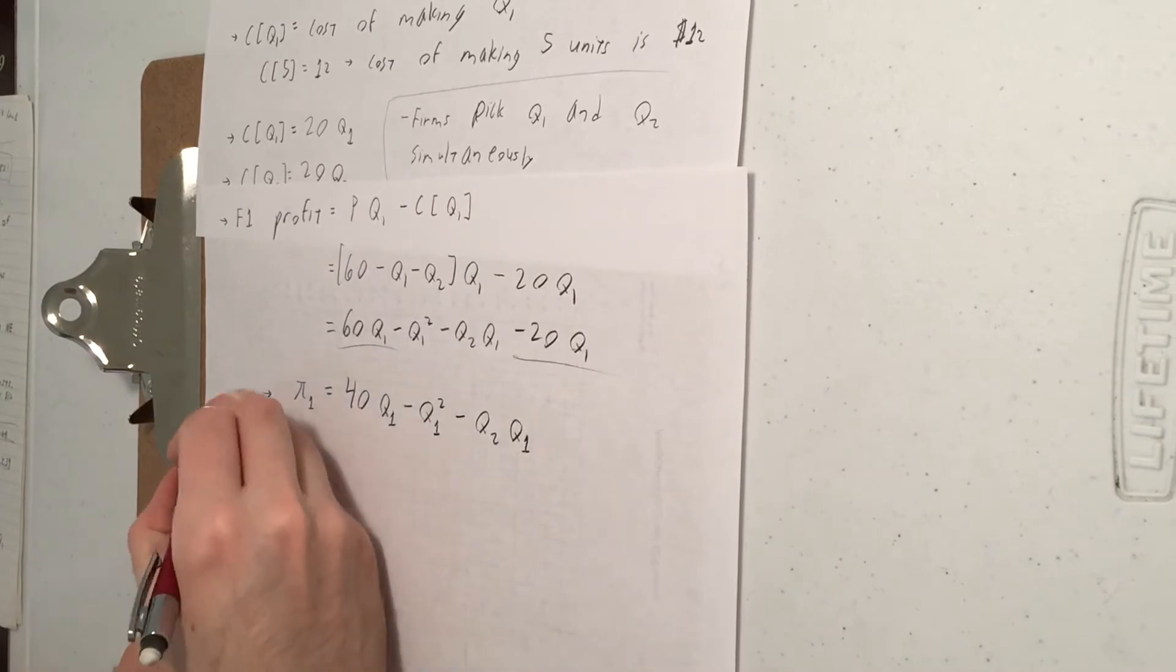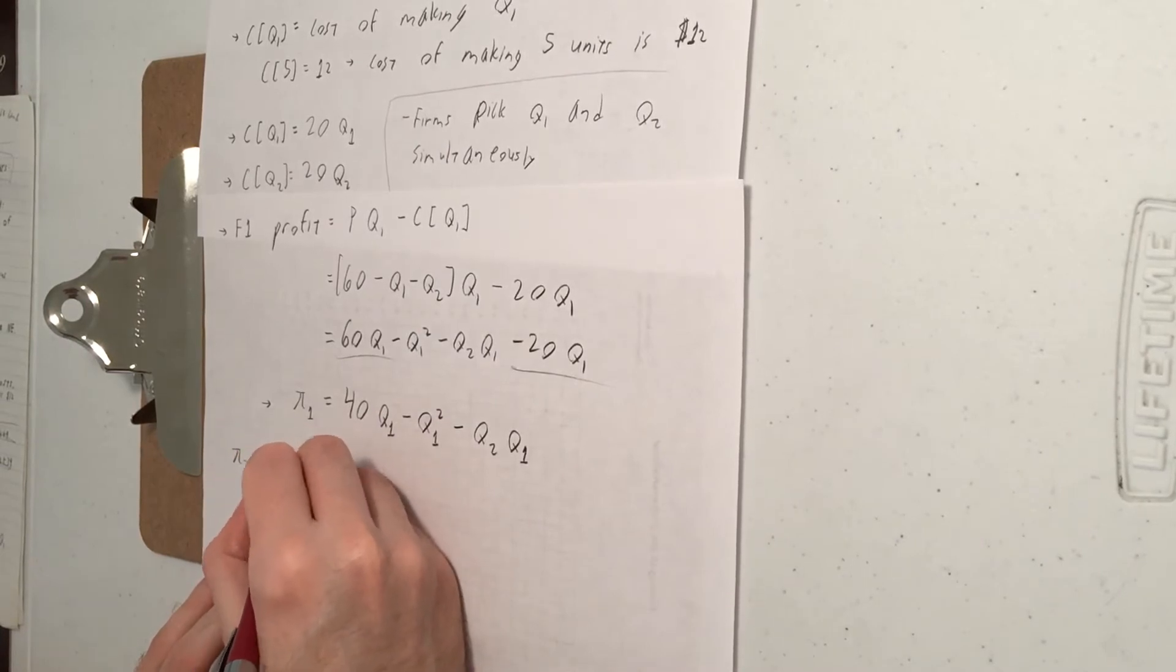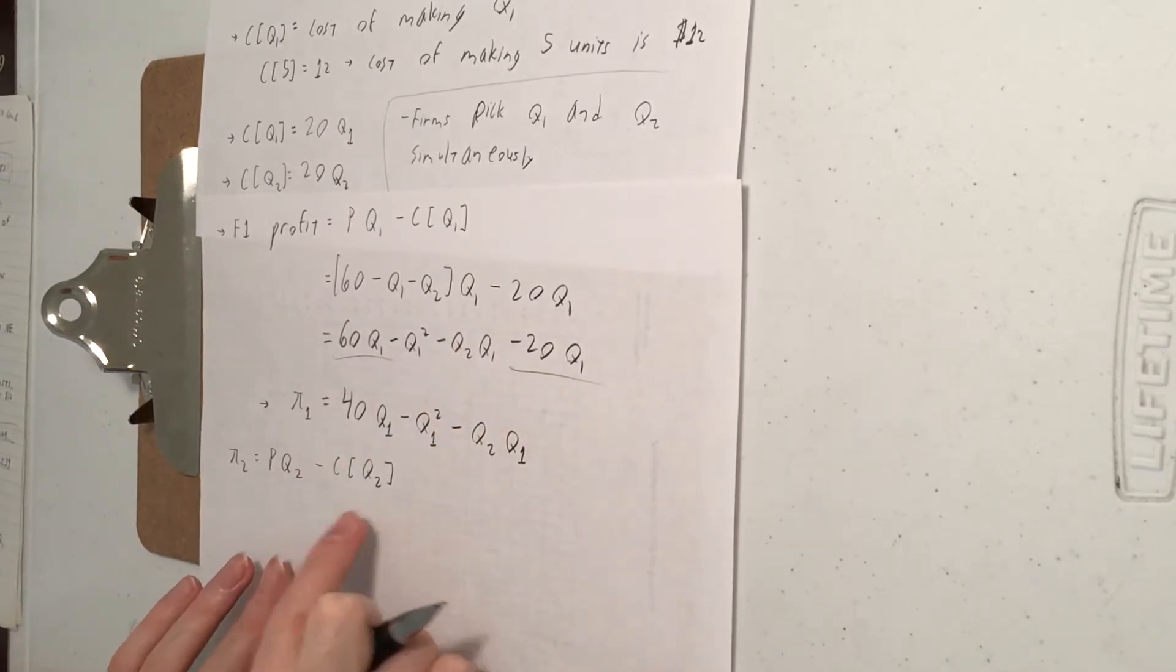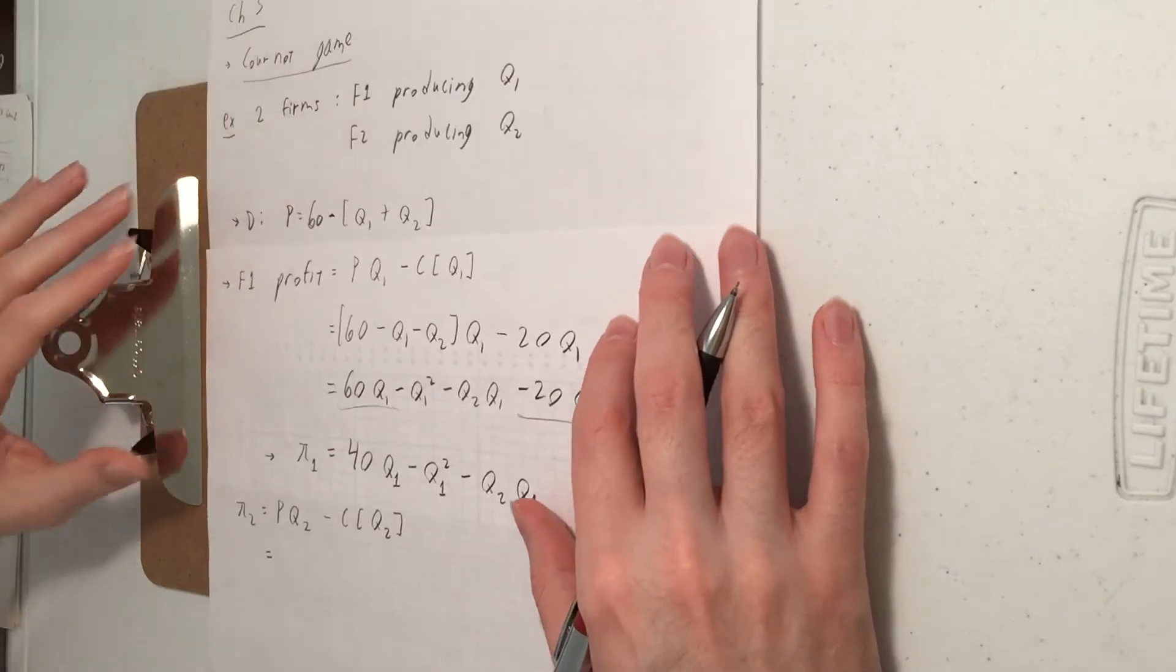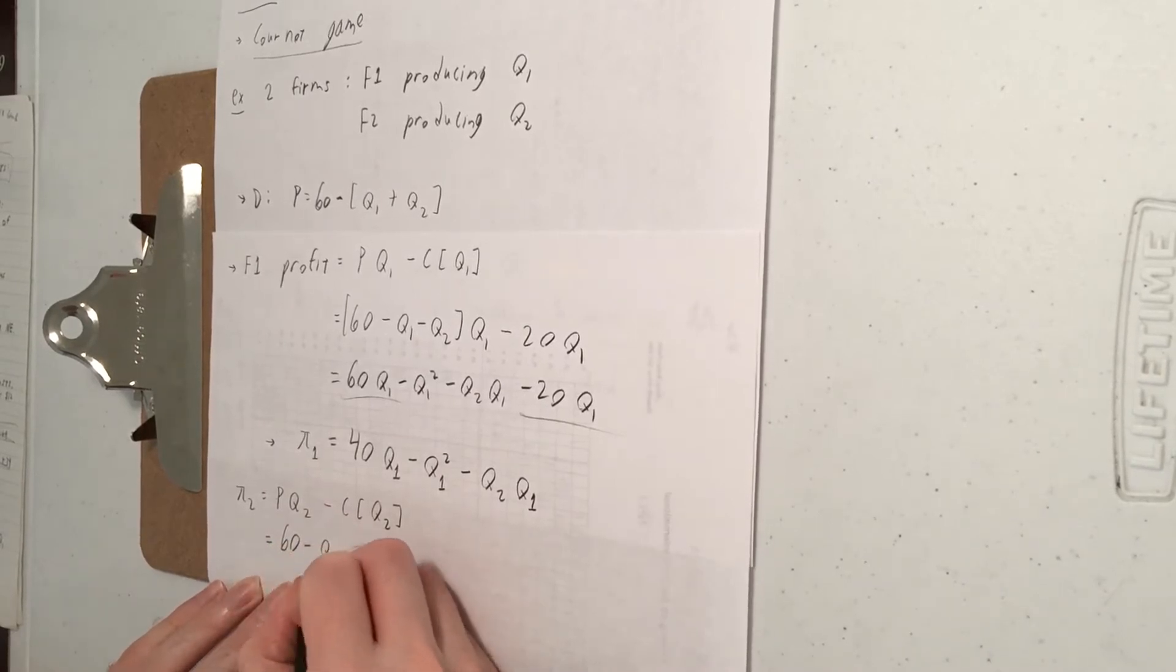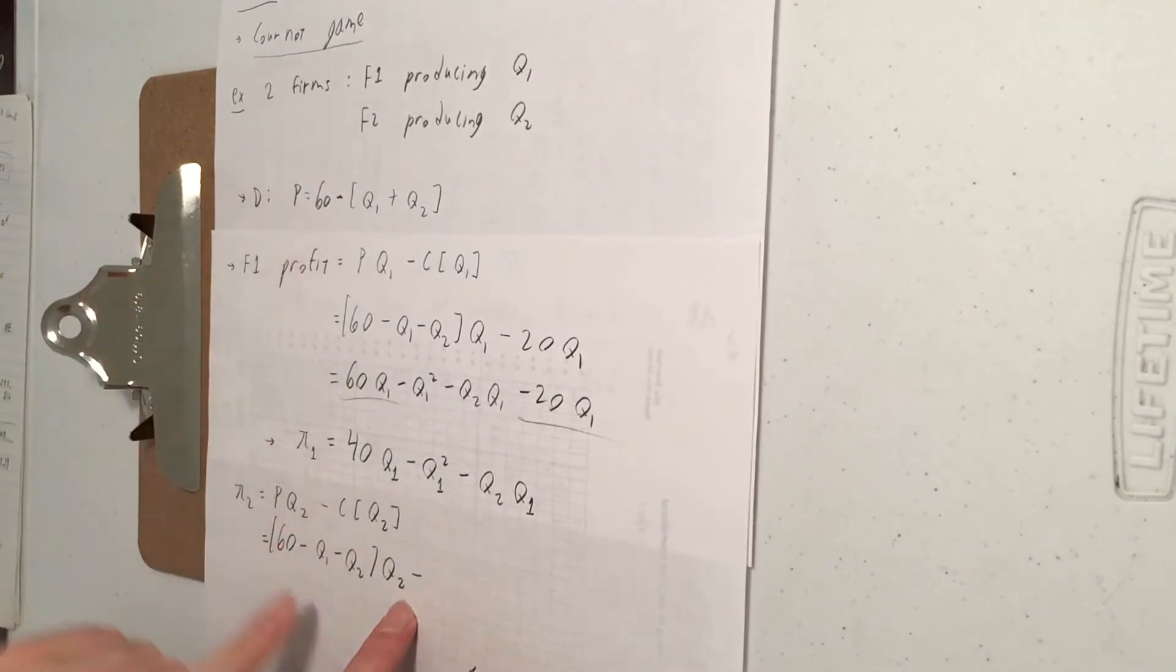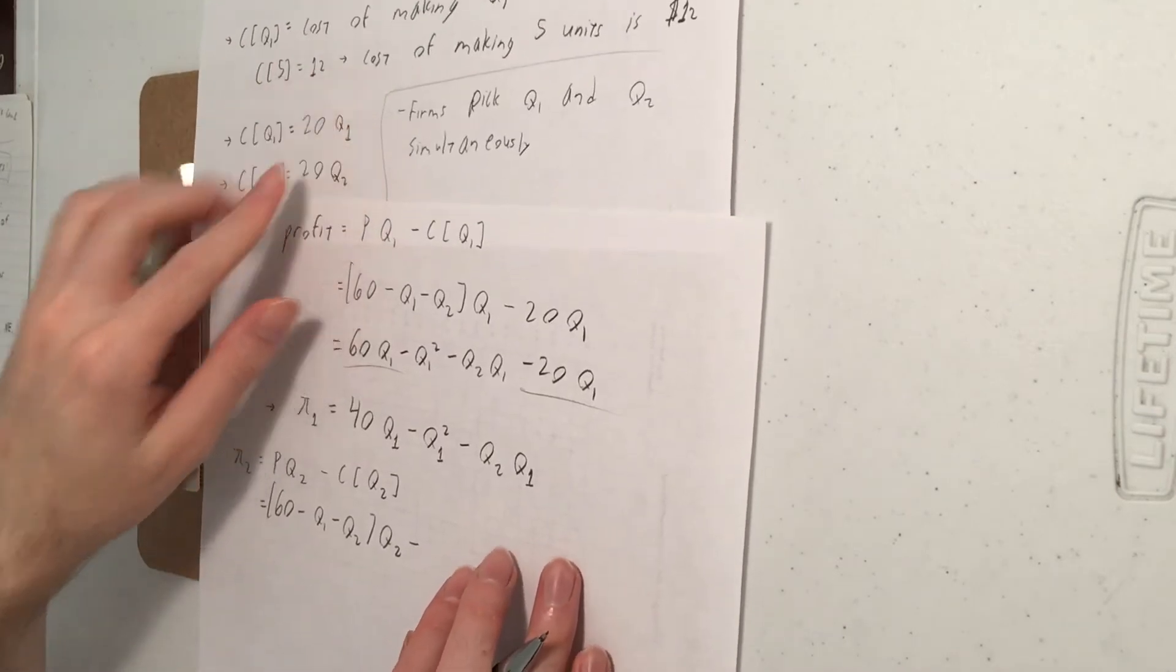We can do the same thing for firm two. So their profit is revenue minus cost. Now they're producing Q2 instead of Q1. So their revenue is price times Q2. Costs are cost of making Q2. So price is still given by demand curve there. So price times Q2 minus cost of Q2. We say cost of Q2 was 20Q2.